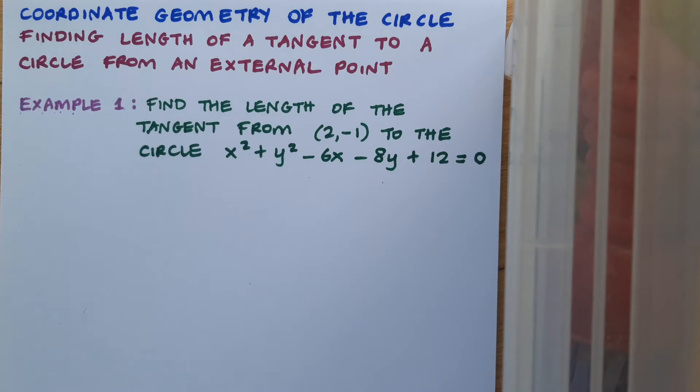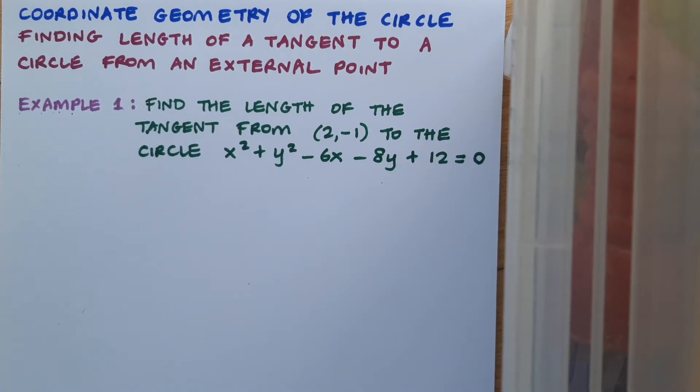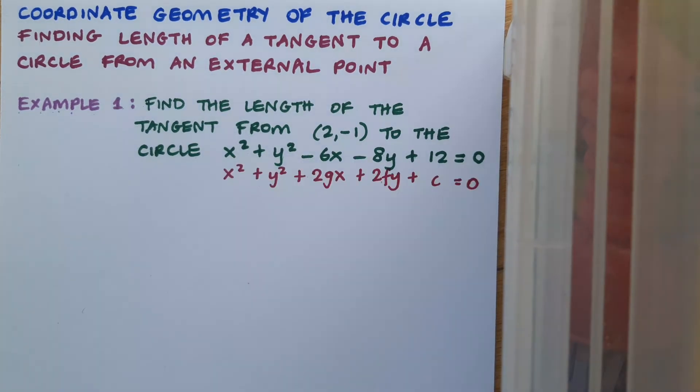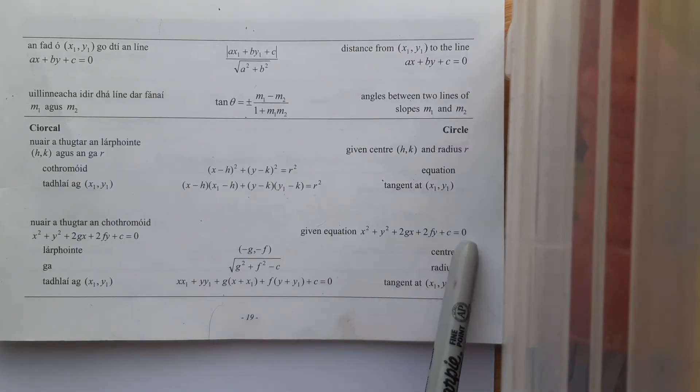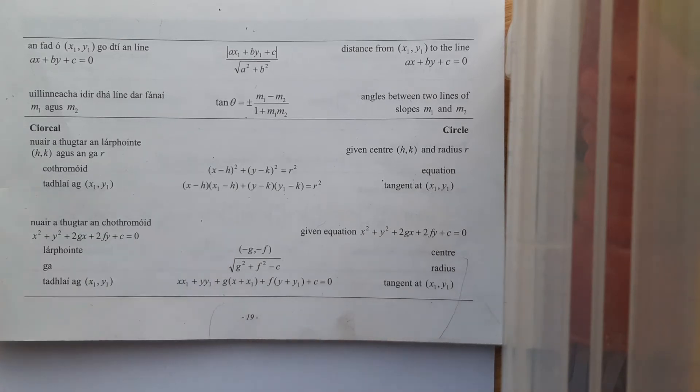Well, I'd like to start out by getting a visual idea of what's going on in this question. To begin that, I'm going to work out the centre and radius of the circle. I'll start off by writing the format for the equation of the circle directly below my equation. You can get this in your log tables on page 19. Once we have that layout, we can work out the centre and radius of our circle.